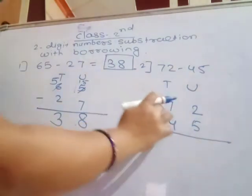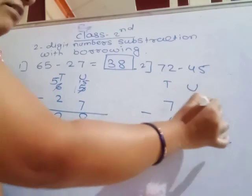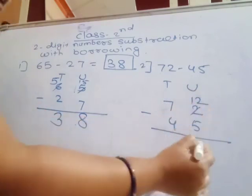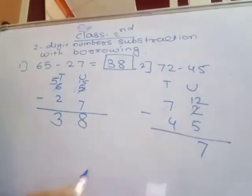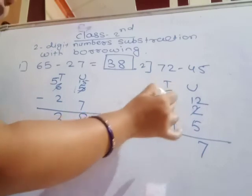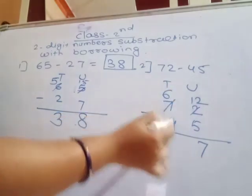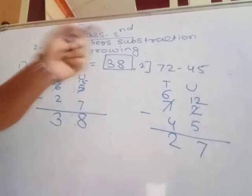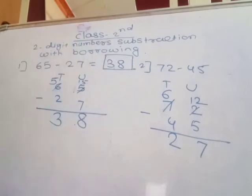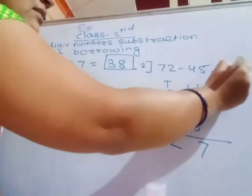2 is small, so borrow 1 from the tens place, making it 12. 12 minus 5 equals 7. Then one less in the tens place: 6 minus 4 equals 2. So 72 minus 45 equals 27.